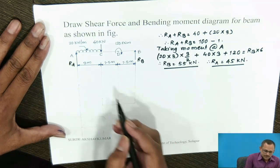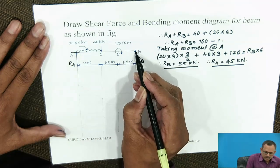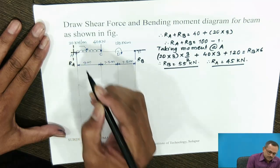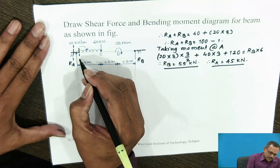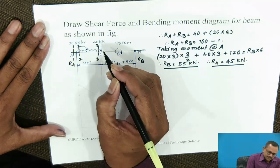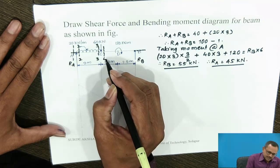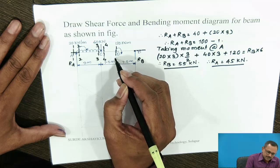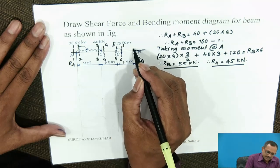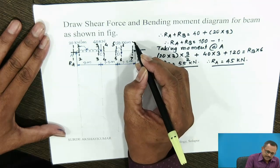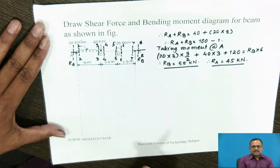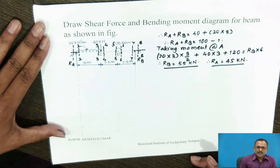For calculating shear forces, we extend the beam beyond points A and B and define sections. Section 1-1 is just to the left of A, section 2-2 just to the right of A, section 3-3 just to the left of C, section 4-4 just to the right of C. At D, section 5-5 is just to the left and section 6-6 just to the right. Section 7-7 is just to the left of B, and section 8-8 just to the right of B. At these sections we calculate shear force values.